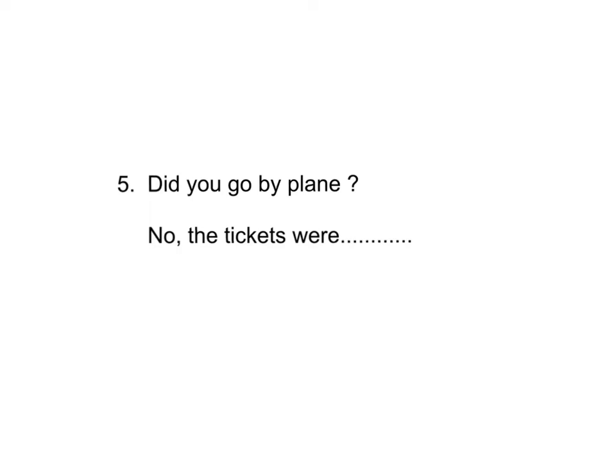你试试这条，number five: did you go by plane? Plane 是飞机，那你是不是坐飞机去呀？No, the tickets were... 机票怎样呢？Too expensive. Expensive 是贵啦。The tickets were too expensive. Did you go by plane? No, the tickets were too expensive. 啊，你有没有坐飞机去呀？没有啊，那些机票太贵了，too expensive.